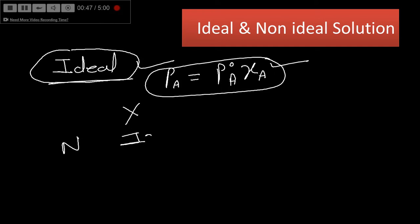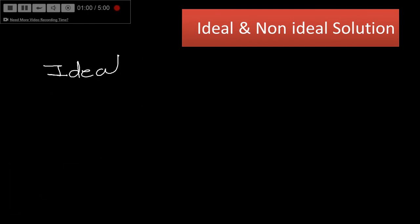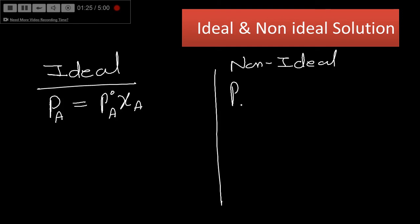What makes a solution ideal or non-ideal? In the case of an ideal solution, the vapor pressure P_A equals the product of the vapor pressure of pure A (P°_A) and its mole fraction x_A. In the case of a non-ideal solution, P_A will not be equal to P°_A · x_A — it will either be greater than or less than this value.